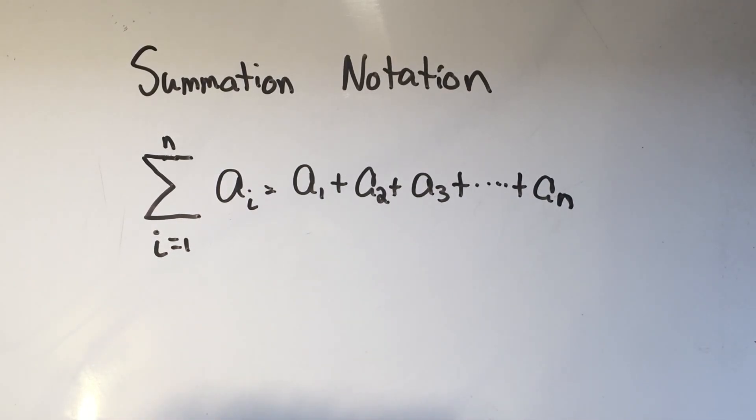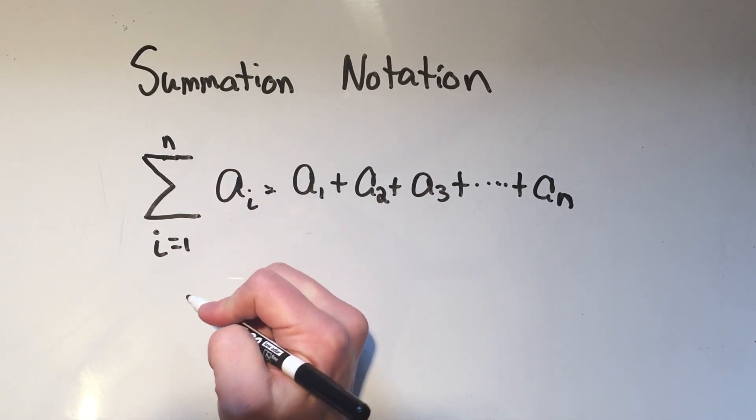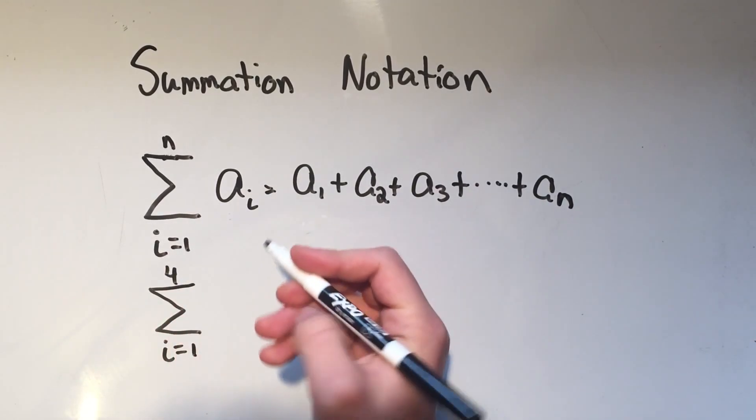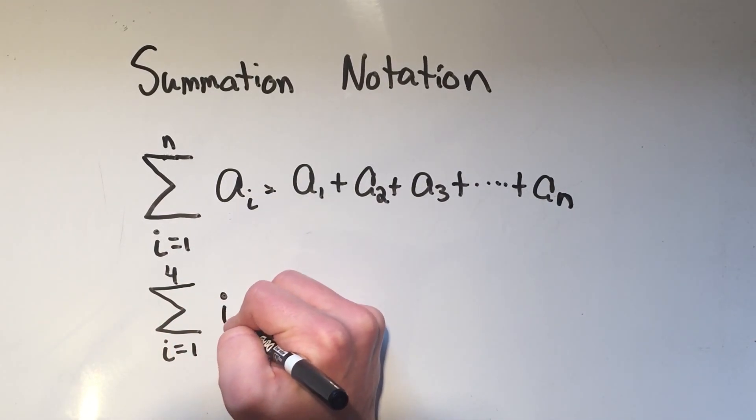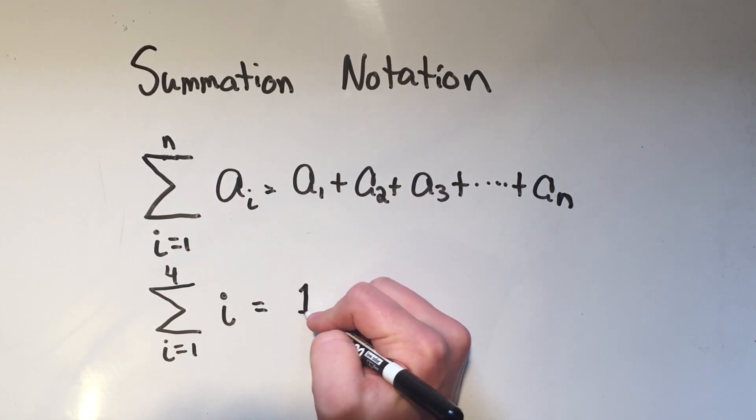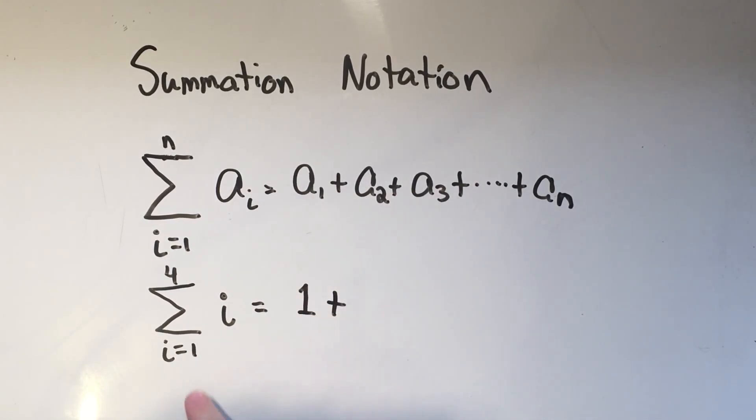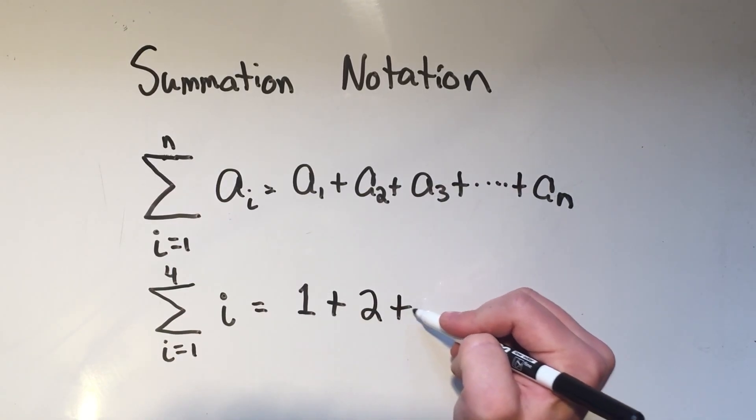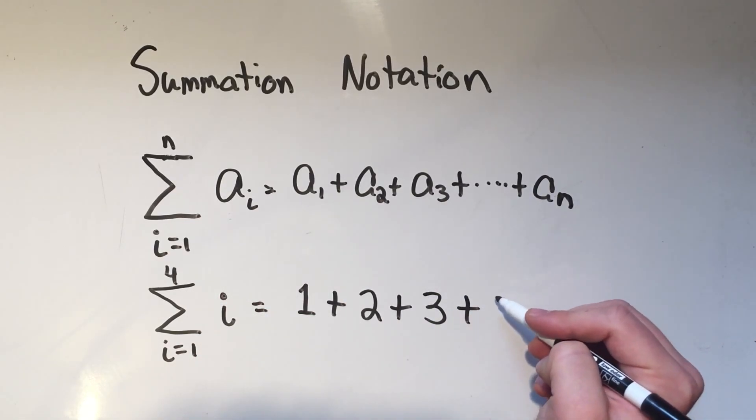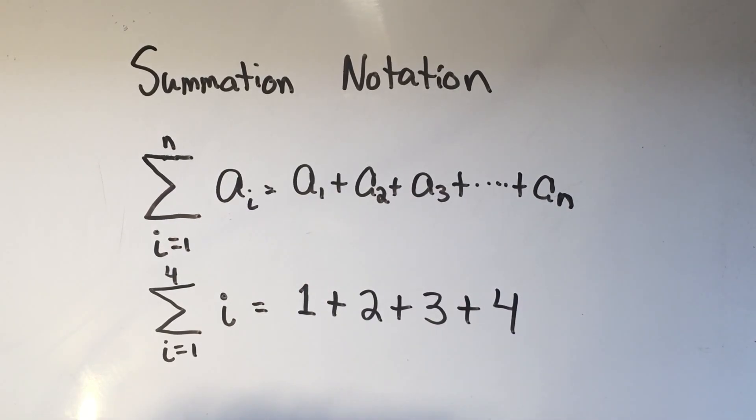So this is a general example. Let me show you a more specific example. I'm going to do the sum from i equals 1 to 4 of just i. So all that means is for my first value, I'm substituting 1, so that's 1 plus, now I substitute my second value, which is 2, and then I substitute my third value, which is 3, and then I substitute my fourth value, which is 4, and now I'm done.